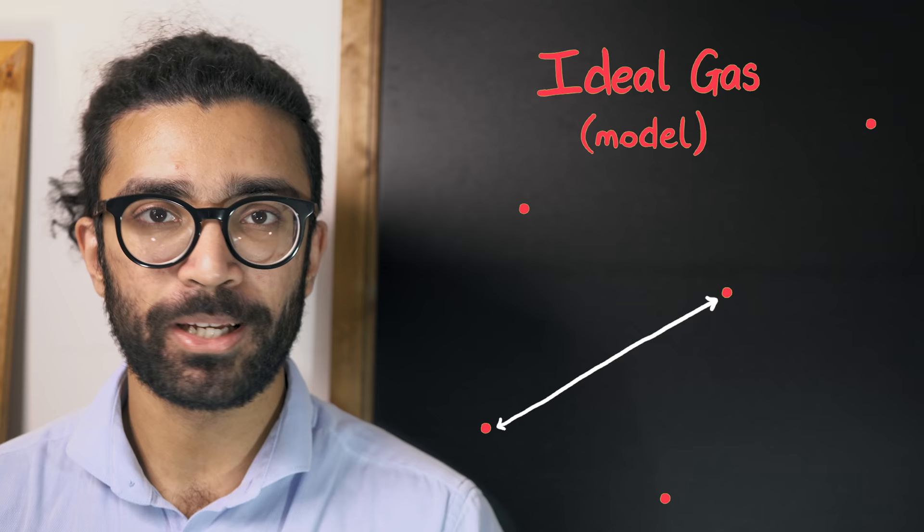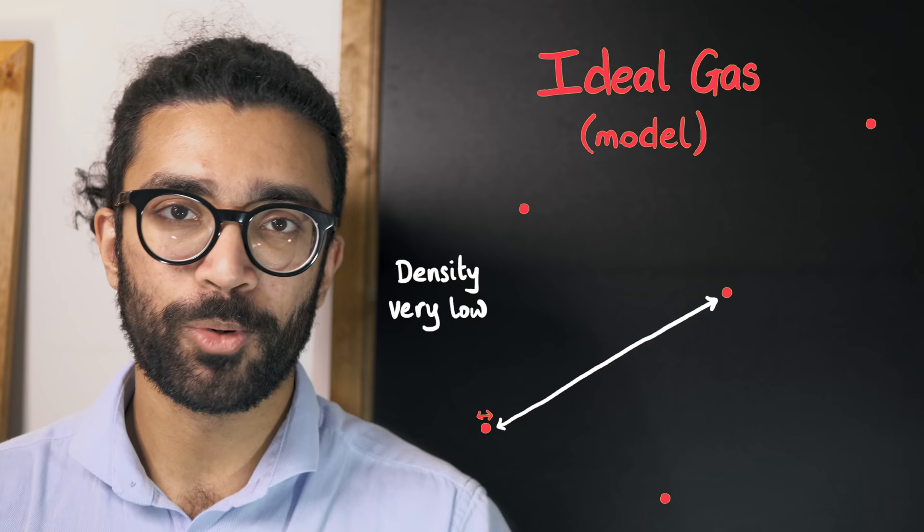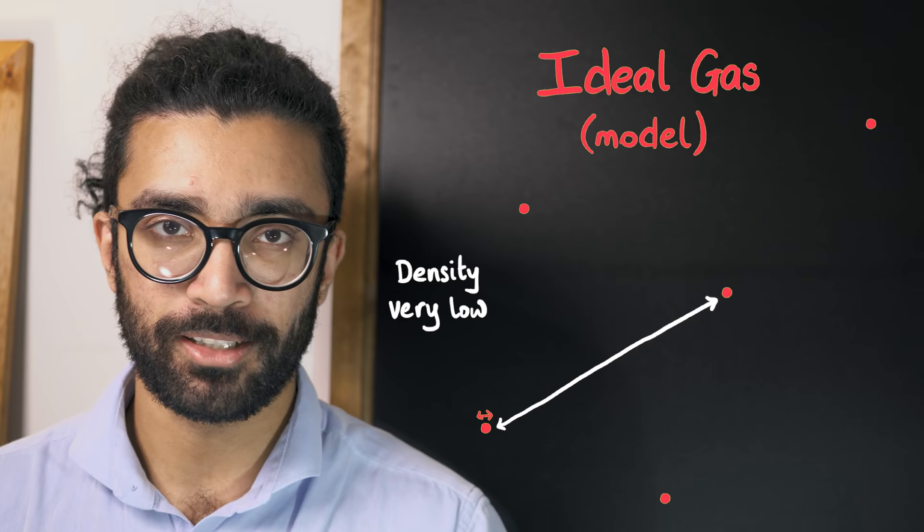Another way to look at this is that the density of the gas is very low. There are very few particles for any region of space that we want to consider, and therefore the average distance between particles is much bigger than the size of a particle by itself.